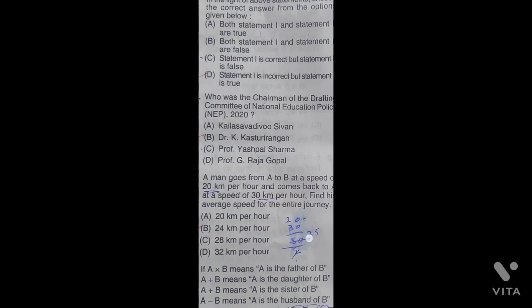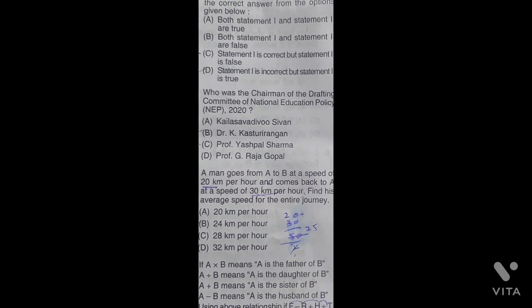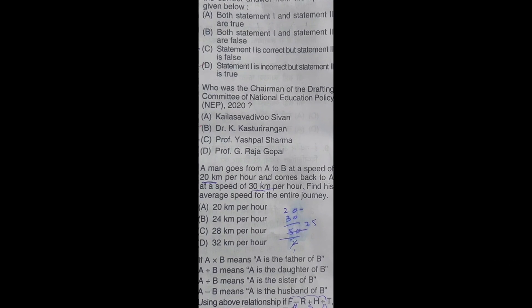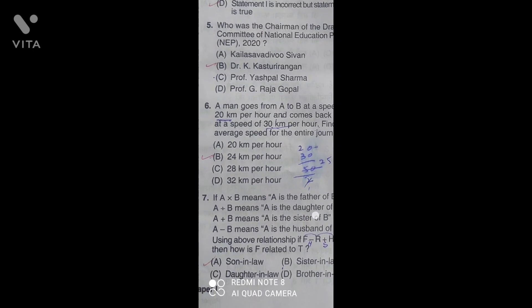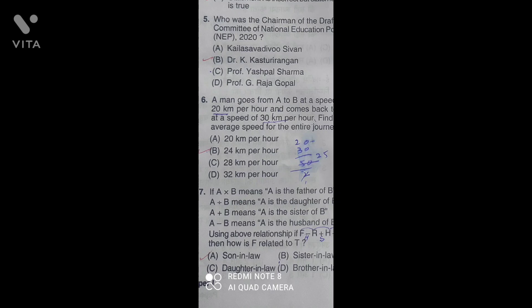Who was the chairman of the drafting committee of National Education Policy 2020? The correct answer is Dr. K Kasturirangan.